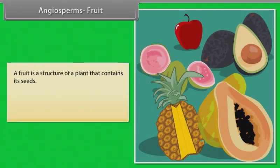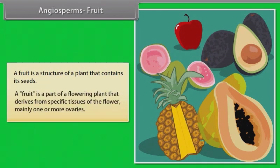Angiosperms Fruit: A fruit is a structure of a plant that contains its seeds. A fruit is a part of a flowering plant that derives from specific tissues of the flower, mainly one or more ovaries.